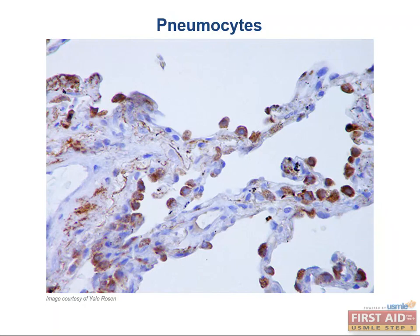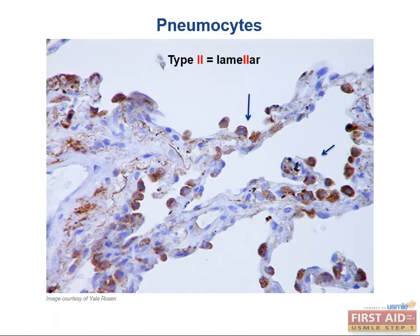Type 2 pneumocytes are less abundant but are extremely important. You can see them here in this histology slide of alveolar tissue. Type 2 pneumocytes secrete pulmonary surfactant from lamellar bodies, and it's the pulmonary surfactant which decreases the alveolar surface tension. Interestingly, these cells can differentiate into either type 1 or type 2 cells, and are the ones that proliferate during lung damage. Here's a little mnemonic: type 2 goes with lamellar, and the 2 kind of looks like the double L in lamellar.